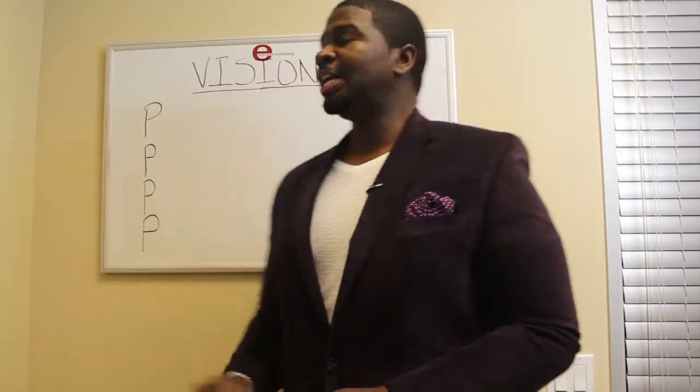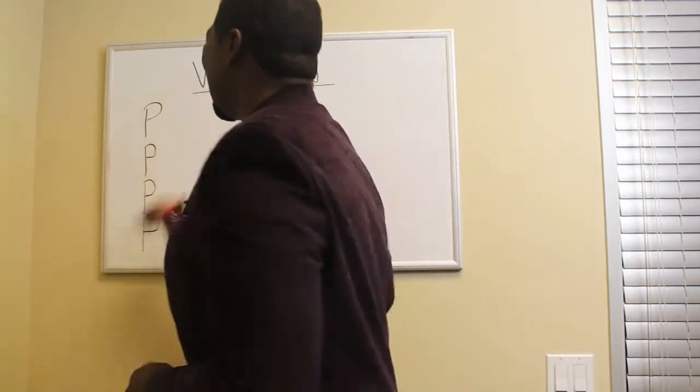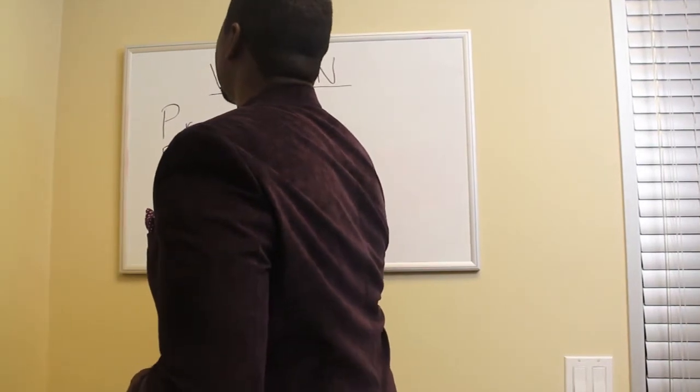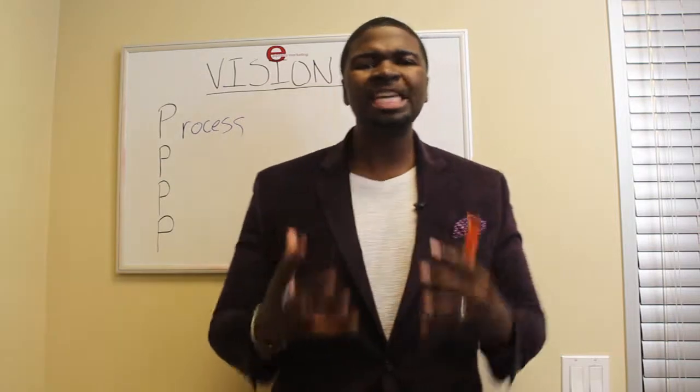The first thing that you very much need in order to turn an idea into a vision is a process. A process is the how-to — it's literally teaching you how to take your idea and turn it into the necessary things that it needs to be turned into. Whether it's a book, whether it's a business, it's the how-to do those different things.